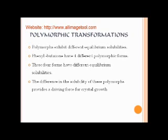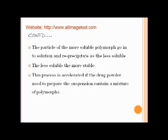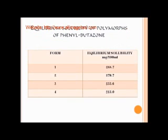The particles of the more soluble polymorph go into solution and re-precipitate as the less soluble form. The less soluble, the more stable the drug. The process is accelerated if the drug powder used to prepare the suspension contains a mixture of polymorphs. These are the 4 polymorphic forms of phenylbutazone and their equilibrium solubilities in mg per 100 mL.